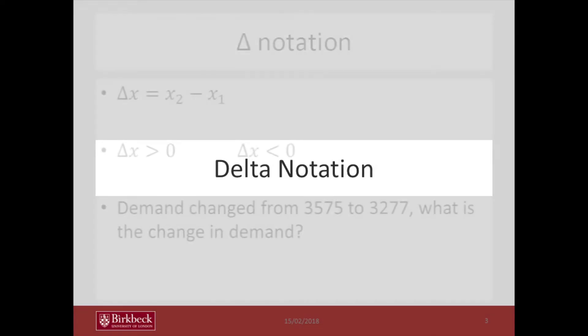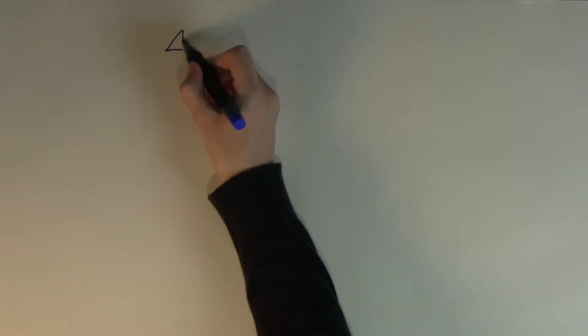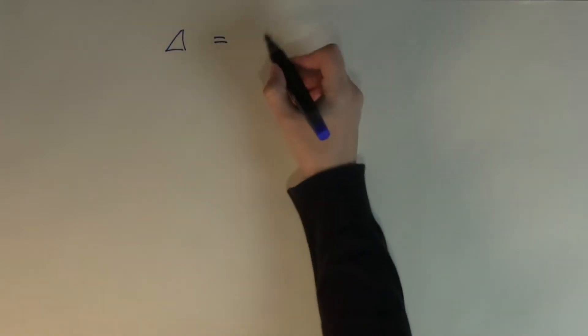The delta notation in mathematics is a specific way of showing the change. Whenever you see this delta, you always have to think about change.